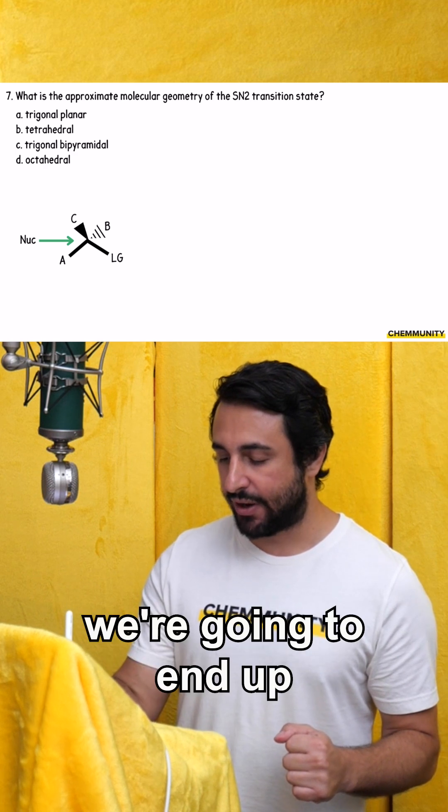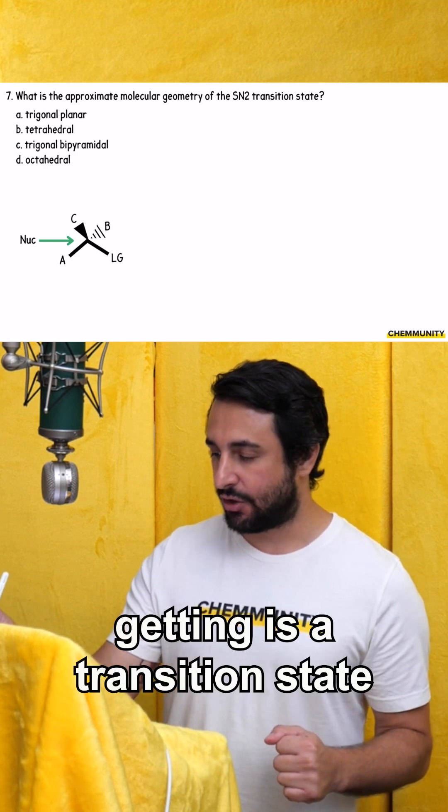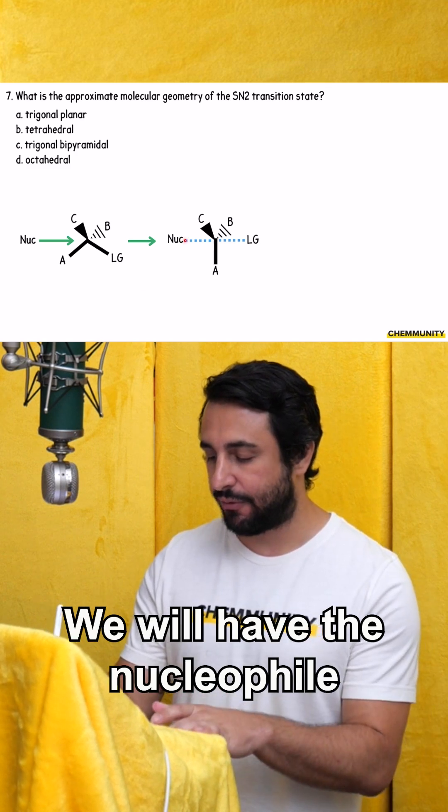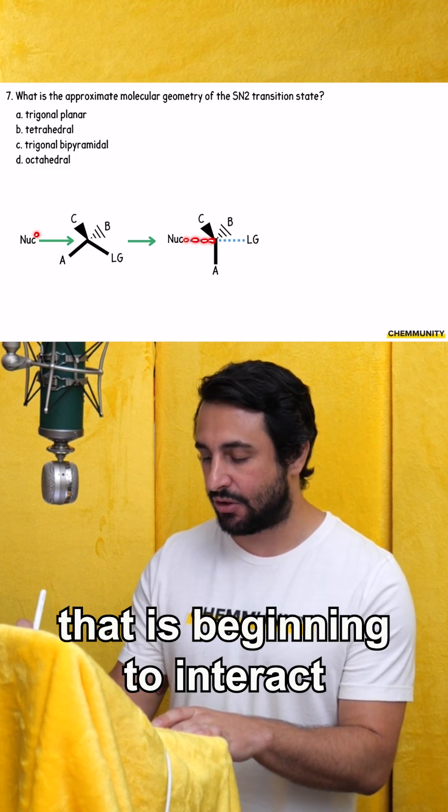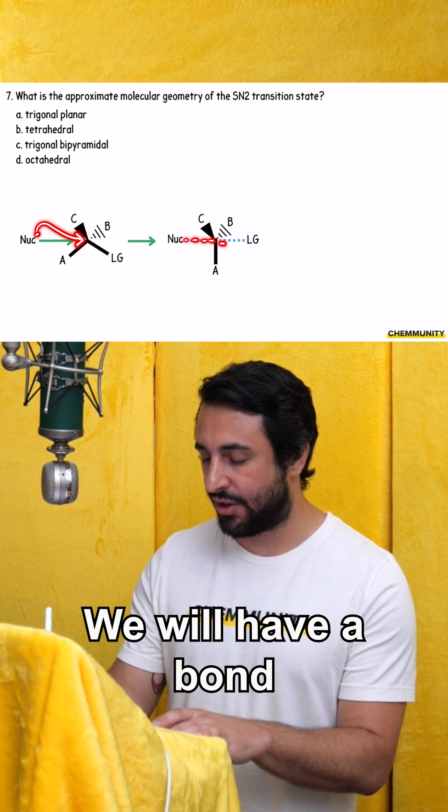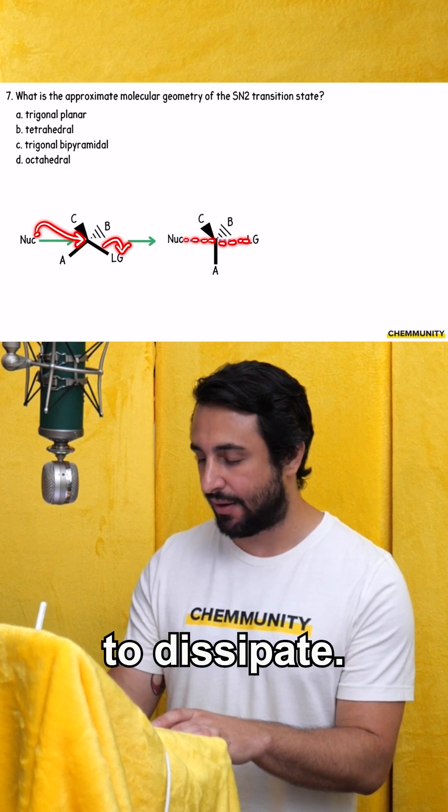And so what we're going to end up getting is a transition state that looks like this. We will have the nucleophile that is beginning to interact with that carbon. We will have a bond to the leaving group that is beginning to dissipate.